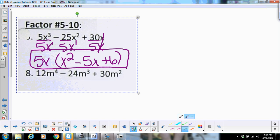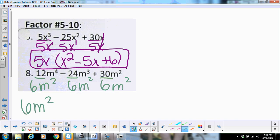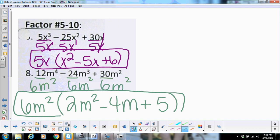All right, on number 8, jump in here and give me 12, 24, and 30. Our GCF is going to be 6 and m squared. So that goes out front. And then we have 2m squared minus 4m plus 5 left.